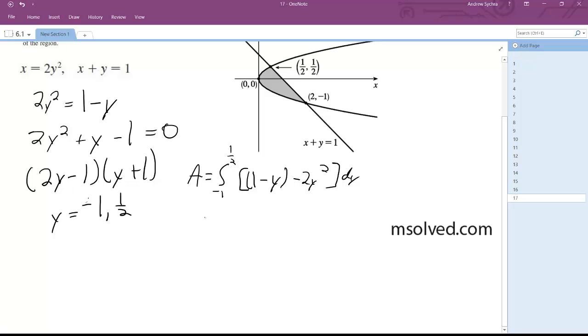Simplifying this down further and integrating it, A is equal to y minus y squared over 2 minus 2 thirds y cubed, evaluated from negative 1 to 1 half.